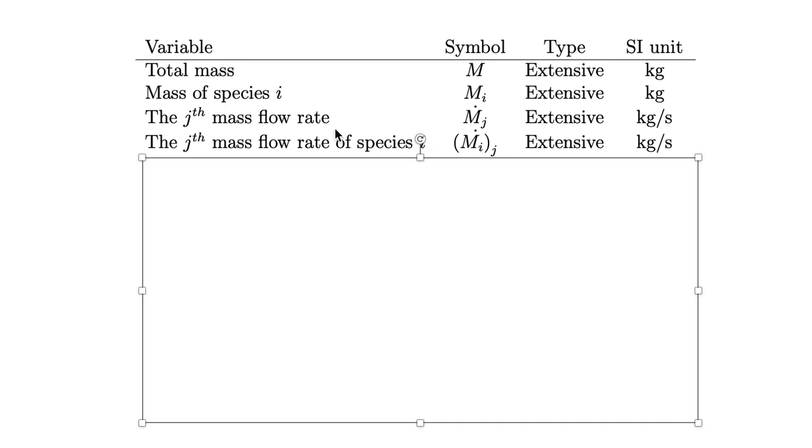Similarly we might have multiple species or compounds and multiple flows of those multiple species, so we'll use different subscripts, multiple subscripts in those situations. That would again be an extensive property of a system with units of kilograms per second.